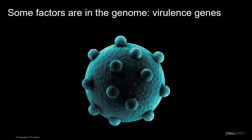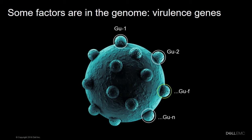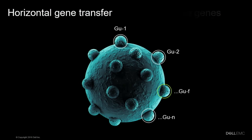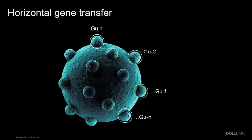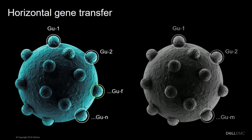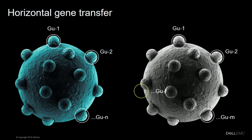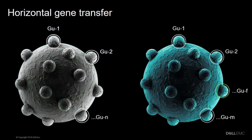Even though some of those virulence factors are encoded in the genome of the pathogens, not all pathogens were born that way. Some microorganisms actually become pathogens due to the horizontal transfer of virulence genes from one microorganism to another.